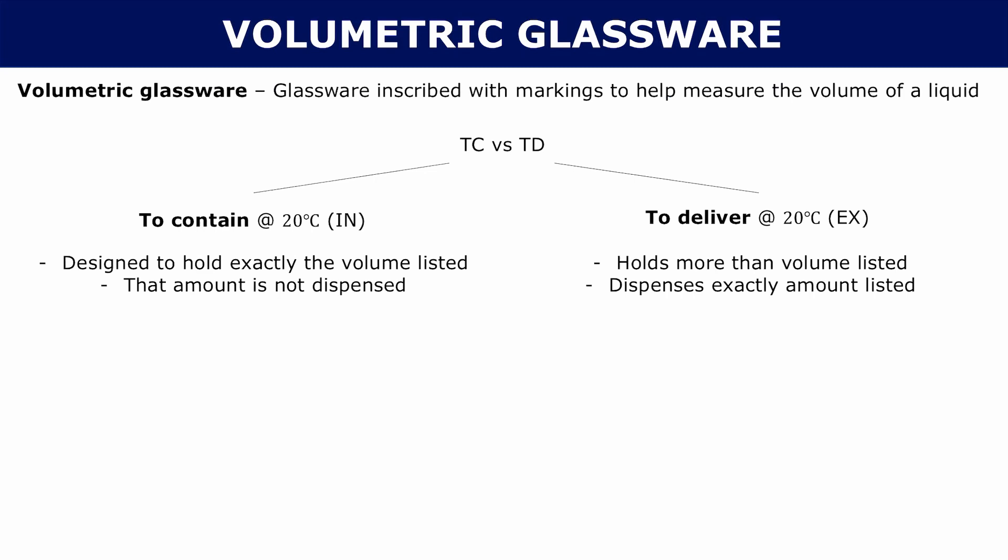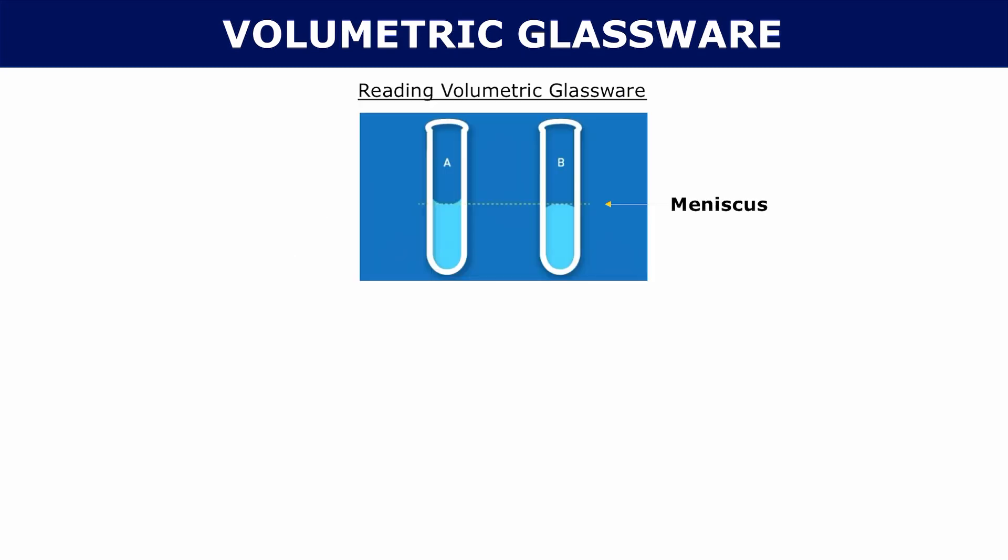Before we get to types of volumetric glassware, let's talk about how to read them. Usually you're going to be dealing with a meniscus. A meniscus looks something like this, it's kind of like a parabola.